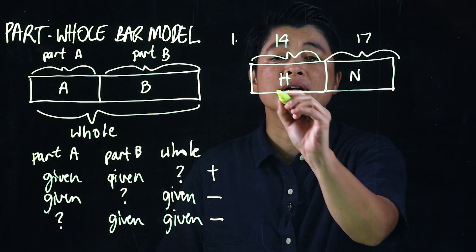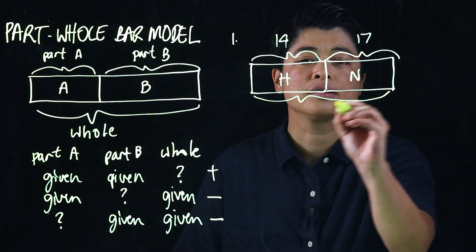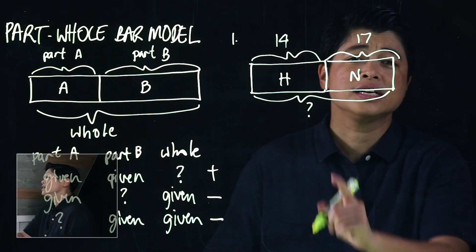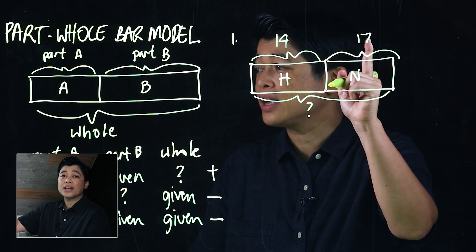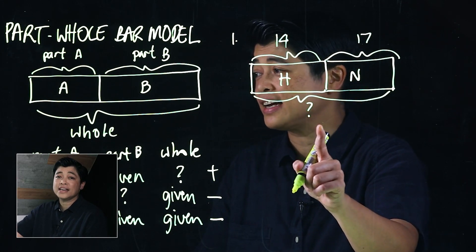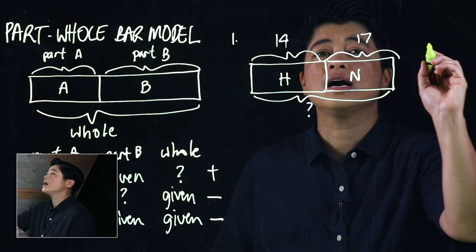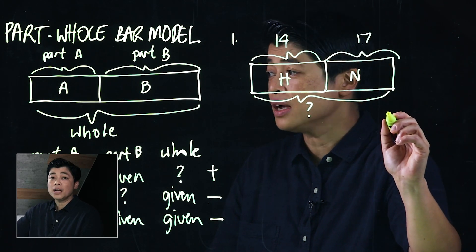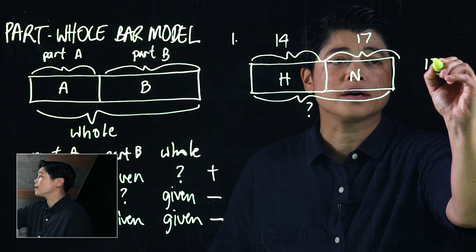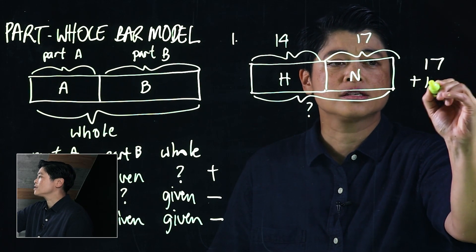The question is how much did they buy altogether. Since we're given a part and another part, and the whole is missing, that means this is an addition problem. Therefore, from the last module, we start with the bigger number then we add the smaller number.